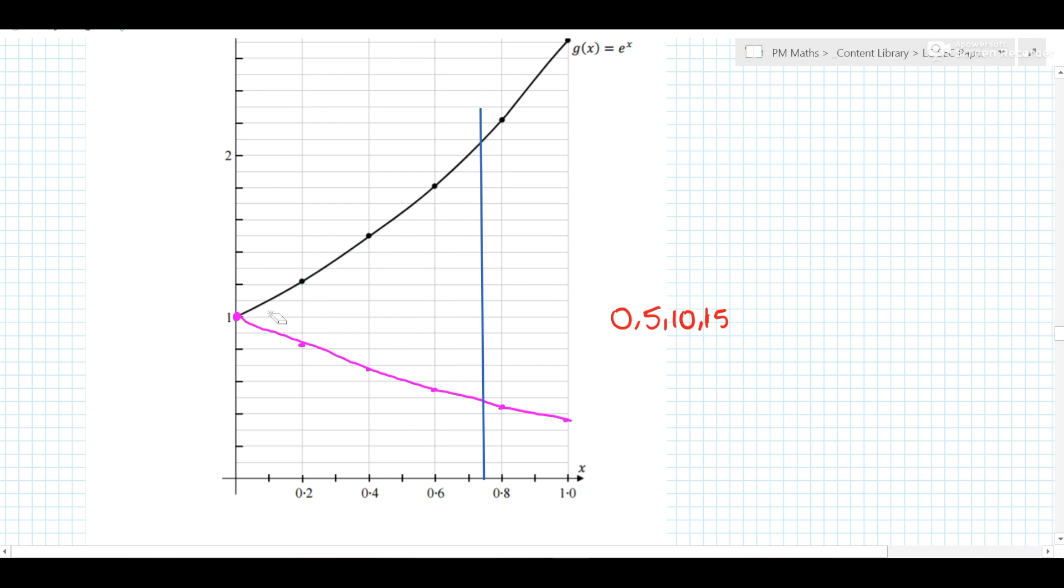So the easiest thing to do is, well, area under a curve—we're going to find the area under g(x) and then we're going to subtract the area under h(x) between 0 and 0.75.